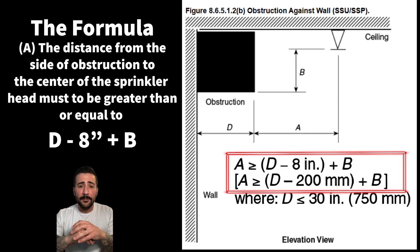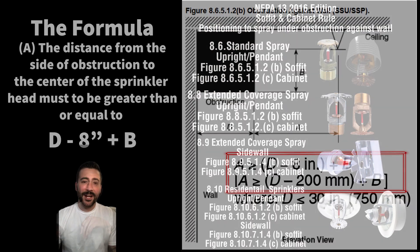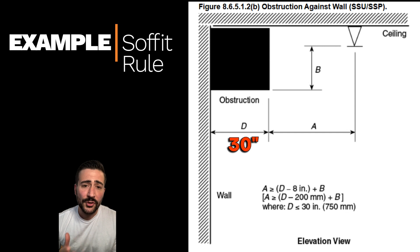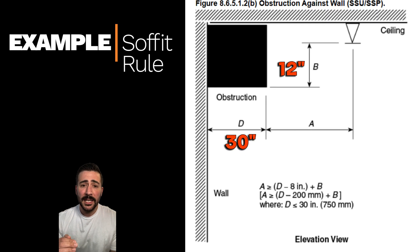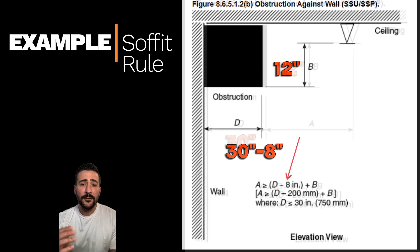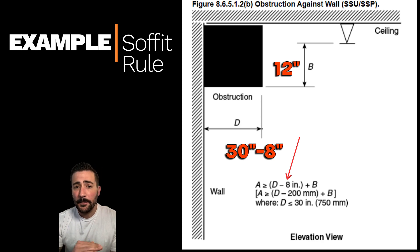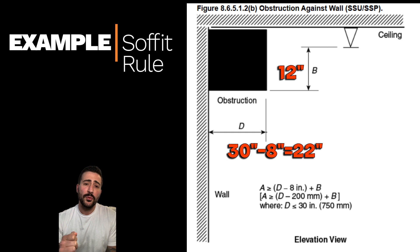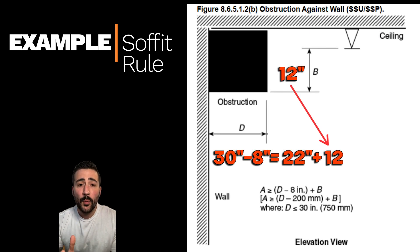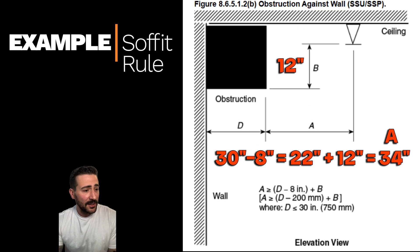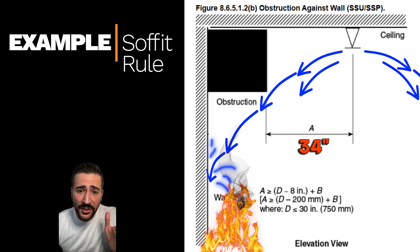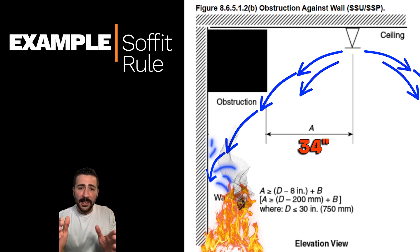This is always the same for all the available heads that we can use. Here's an example with realistic field numbers: D is 30 inches — the width of the obstruction — and B, the distance from the bottom of the obstruction to the sprinkler deflector, is 12 inches. First, take D (30 inches) and minus eight — always — giving us 22 inches. Then add 12 inches to the 22, giving us 34 inches. That is how far from the side of the obstruction to the center of the sprinkler head we have to be to achieve a full spray pattern underneath our obstruction.